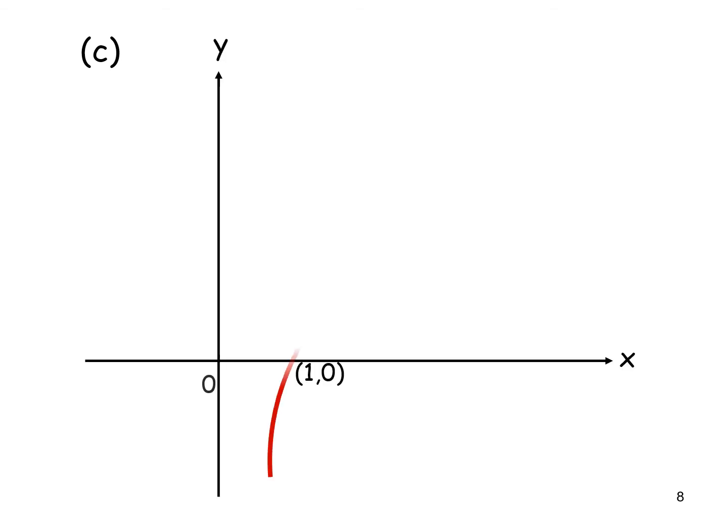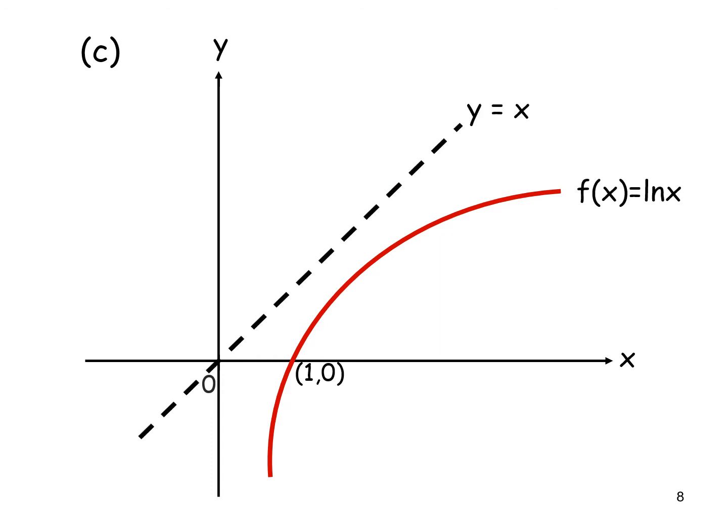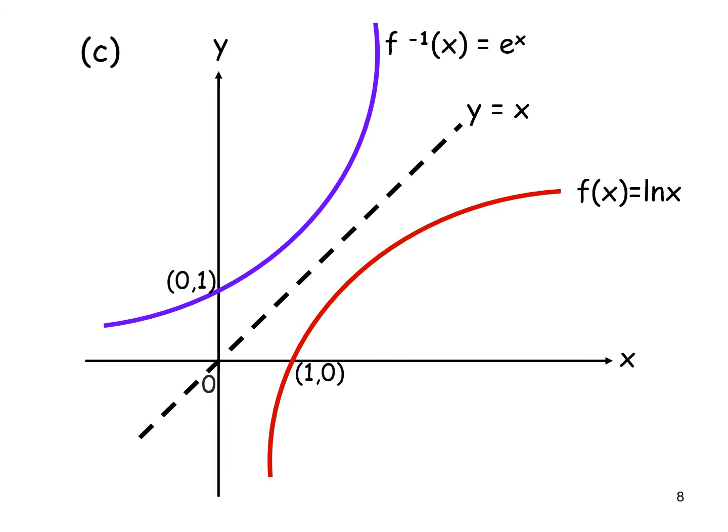Sketching the graphs: we draw the log function ln(x), then the reflection line y equals x. Reflecting ln(x) about y equals x gives the exponential function, so y equals x acts as a mirror. Note that the coordinate for ln(x) passes through (1, 0) and the exponential function passes through (0, 1).